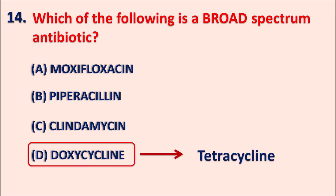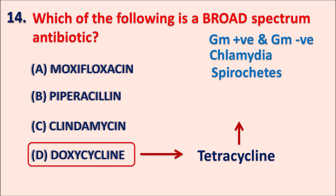Doxycycline is one of the tetracyclines, and tetracyclines are called broad spectrum antibiotics because they are effective against various types of organisms — gram-positive as well as gram-negative infections, and also chlamydial infections, spirochetes, mycoplasma infections, and rickettsia infections. Because of their broad spectrum of activity, whenever tetracyclines are given, they can produce superinfections by inhibiting the protective gut flora.